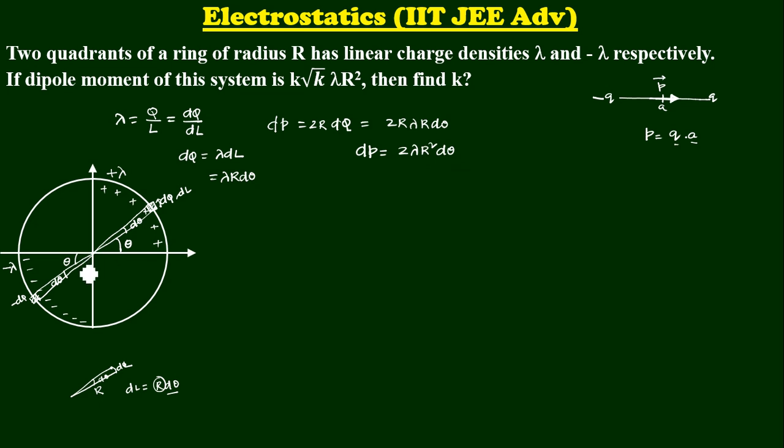Now, this is the dP and that will always be directed from minus charge to plus charge. Now, it should be in this direction. Minus charge to plus charge. It should be in this direction. That is your dP. Now, this dP will be having 2 components. One along x-axis. Can I say if this is theta, can I say this as dP cos theta? I am taking the components of dP vector.